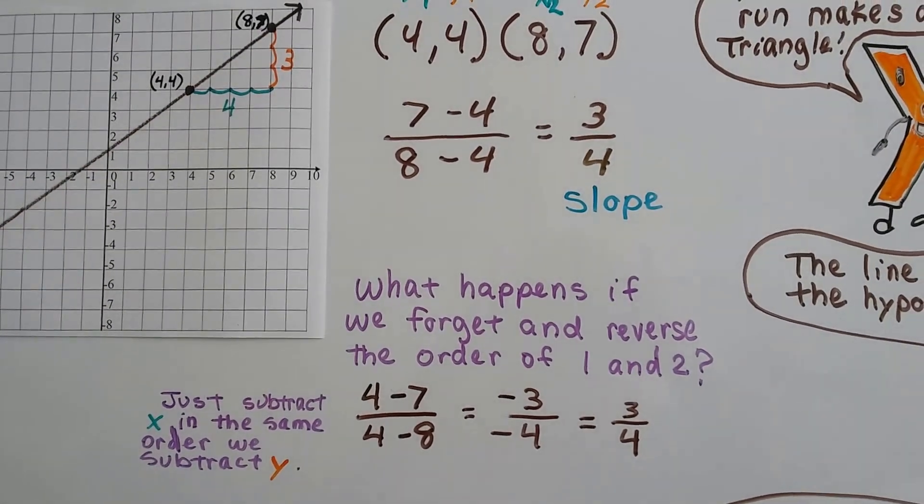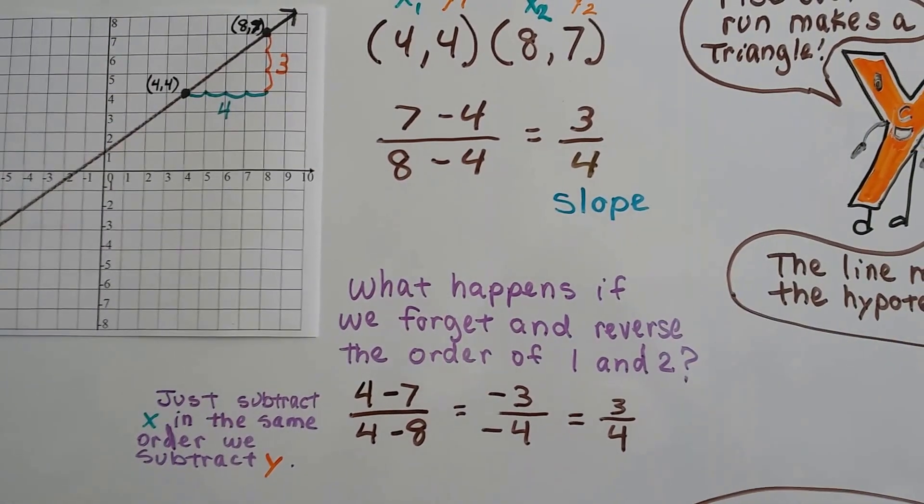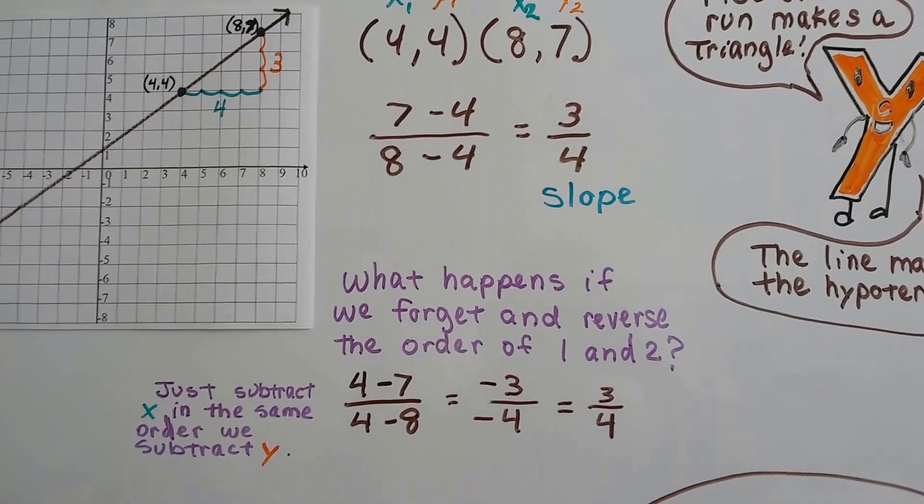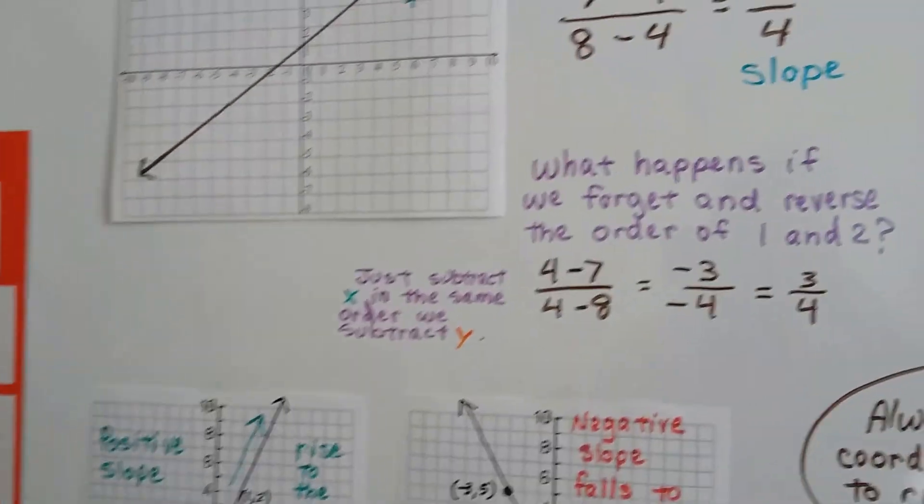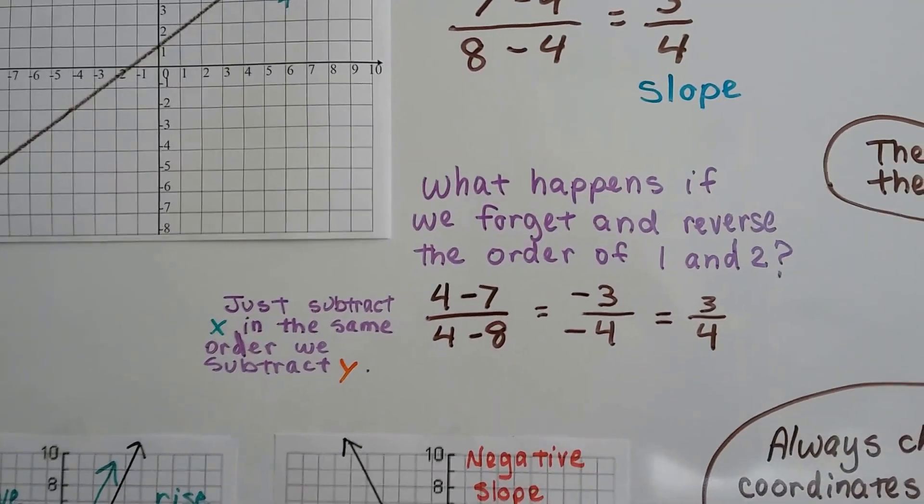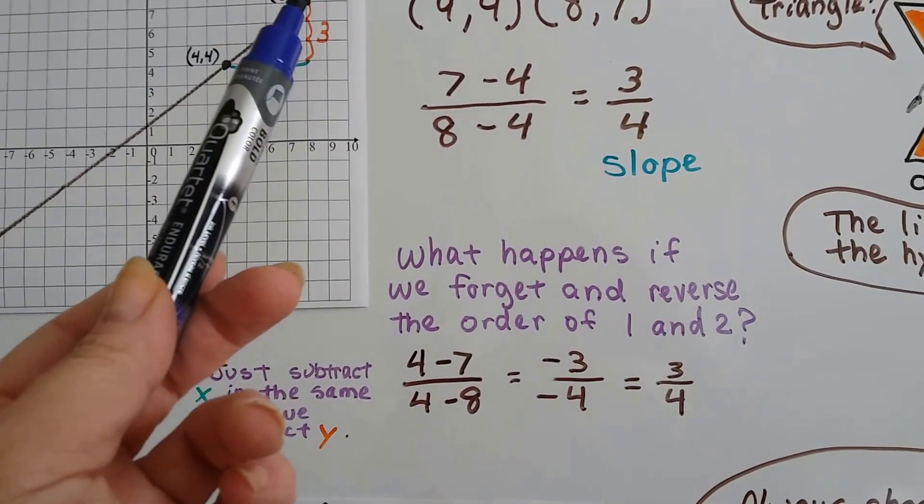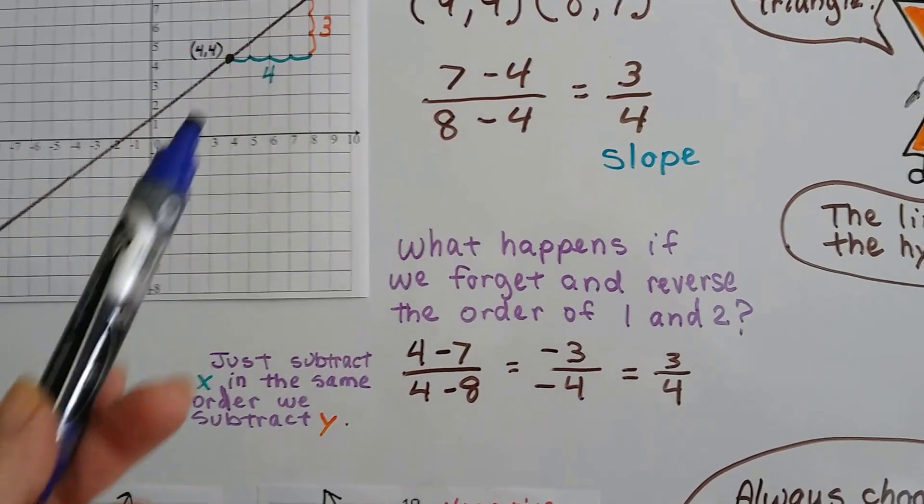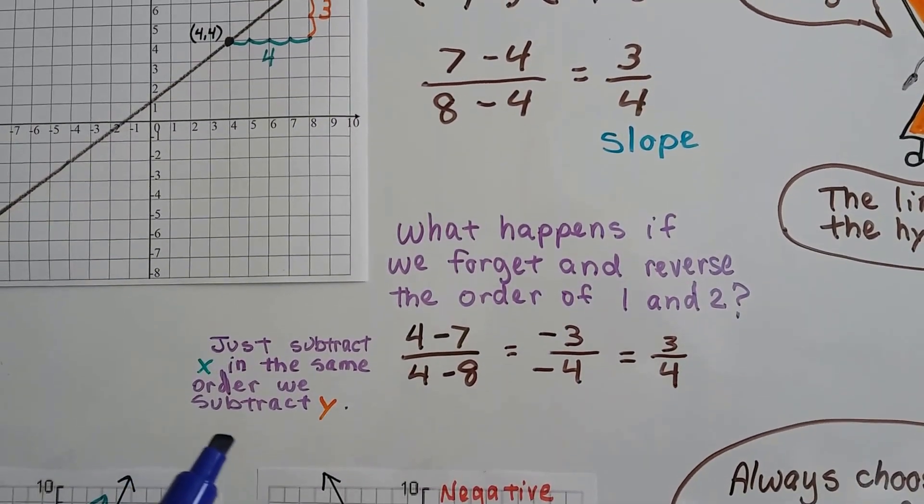Well, it doesn't really matter. You could still find the answer. But it's better to choose your coordinates from left to right and do the formula as it's written. If you make a mistake and you reverse the order of x2, like you say this is x1, y1, and this is x2, y2, you could still do the math.